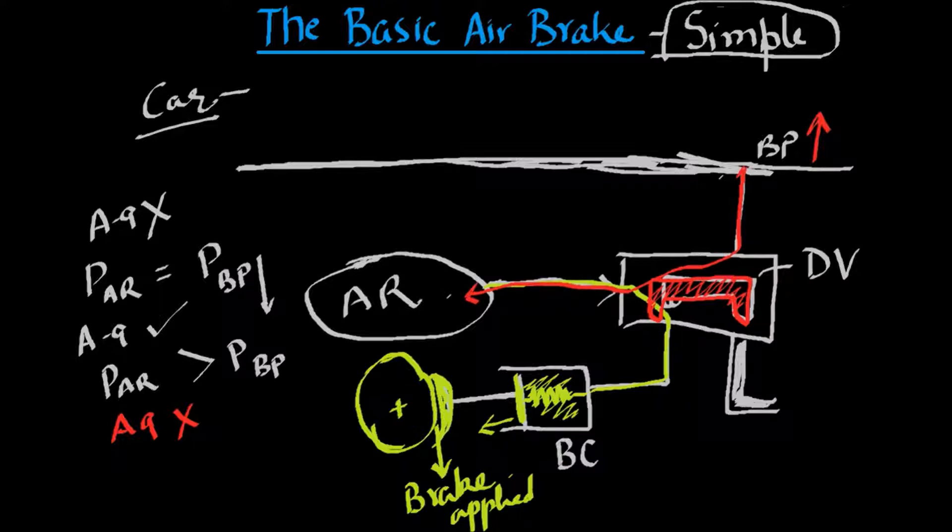The AR pressure that would have reduced by supplying air to the BC now gets charged from the air coming from the BP. At the same time, this movement of the slider inside the DV causes the BC air to now vent out through the exhaust port of the DV.